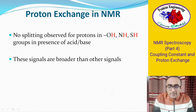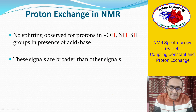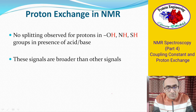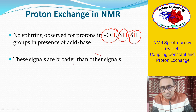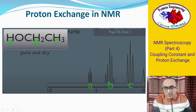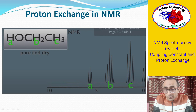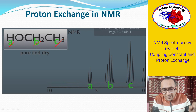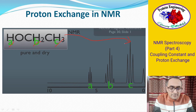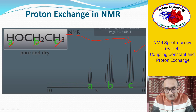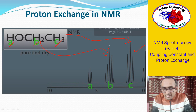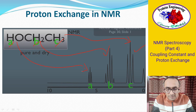Now, proton exchange in NMR: for groups like OH, NH, and SH in the presence of a slight acid or base, splitting is not observed and the signals for these protons are broader than others. This is due to proton exchange. In ethyl alcohol (CH3-CH2-OH) there are three types of protons: A, B, and C. The C-type methyl peak is a triplet because there are two neighboring protons; the B-type CH2 proton is a multiplet; and the A-type OH proton is a triplet — this is the pure, dry alcohol spectrum.